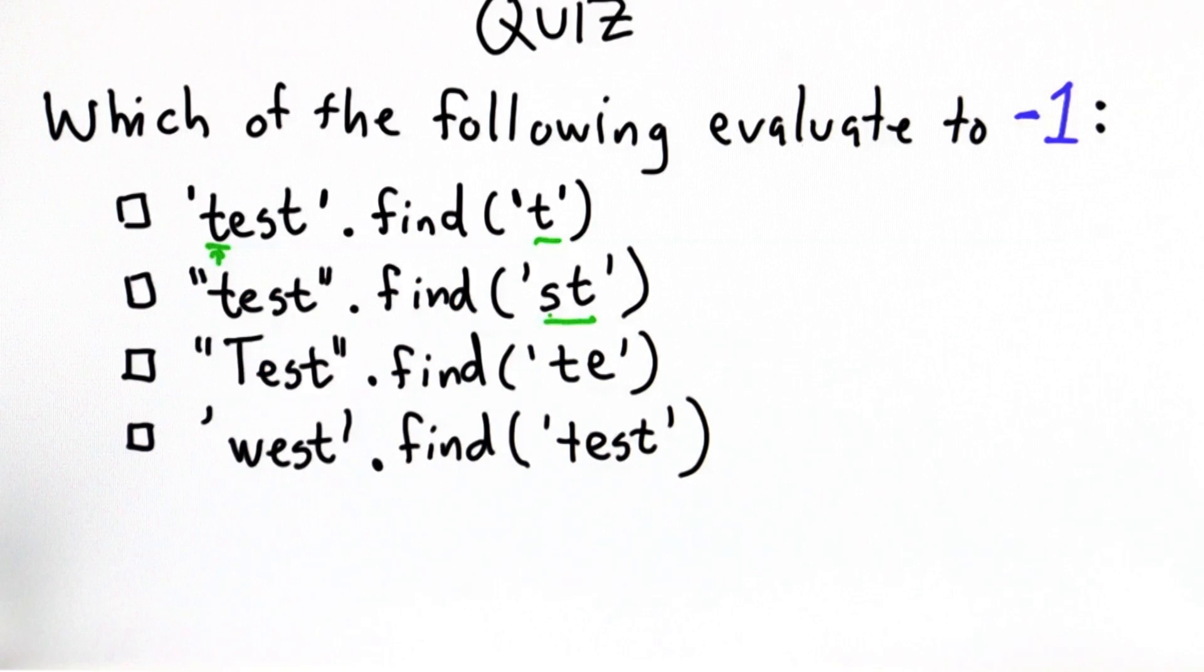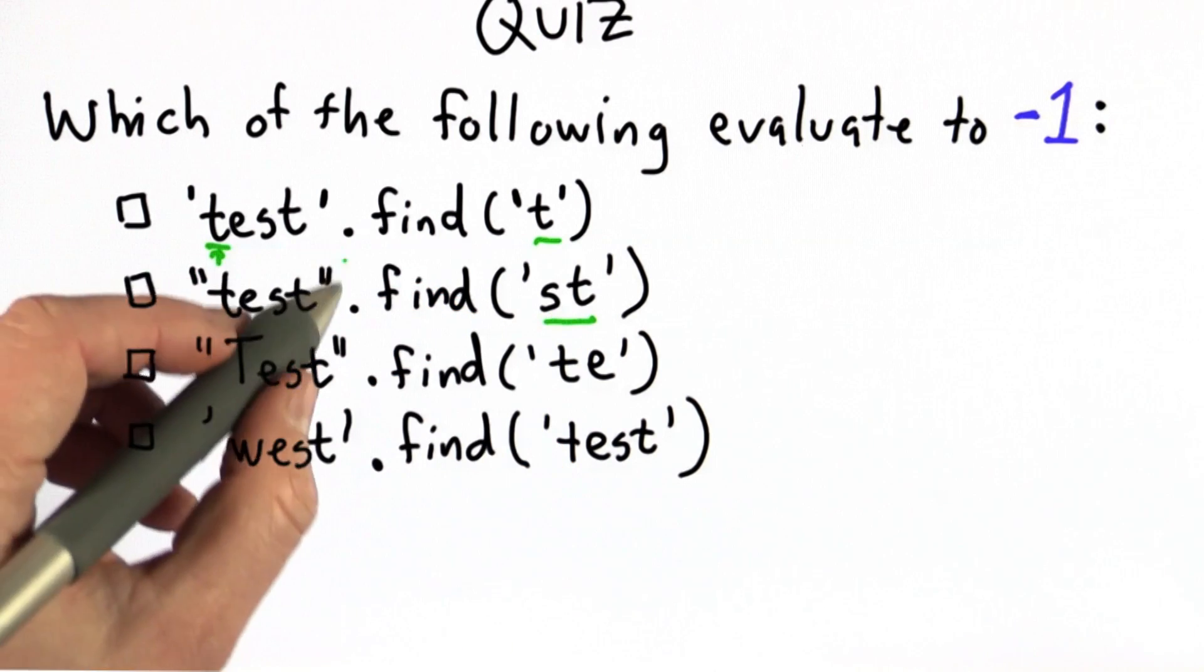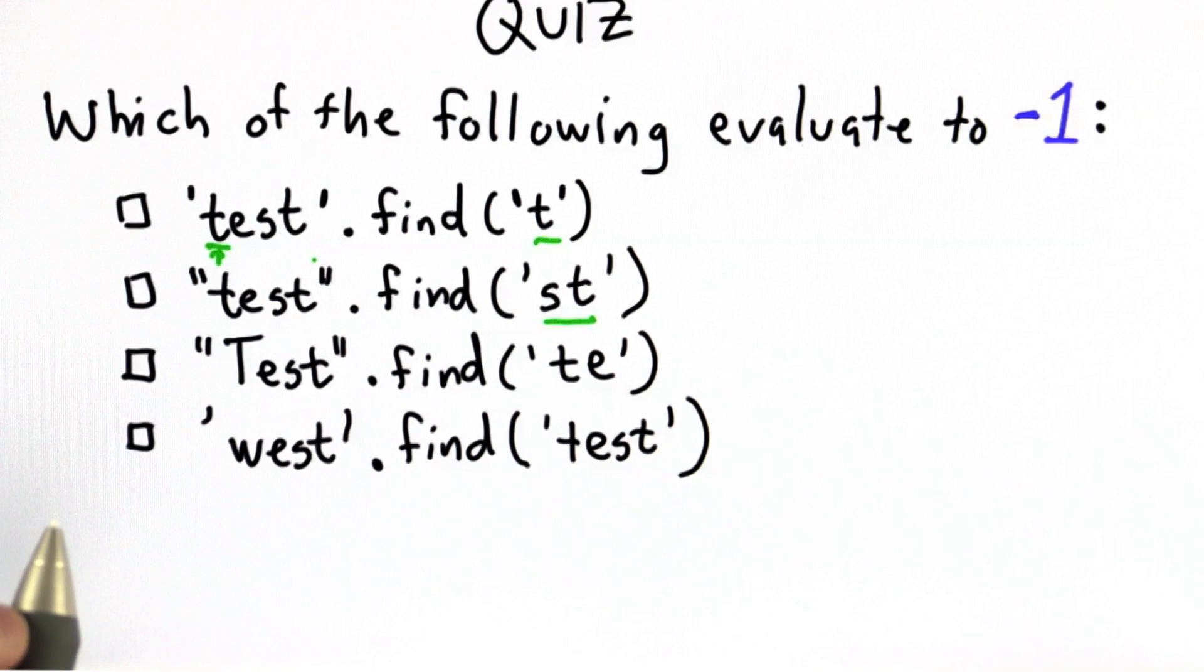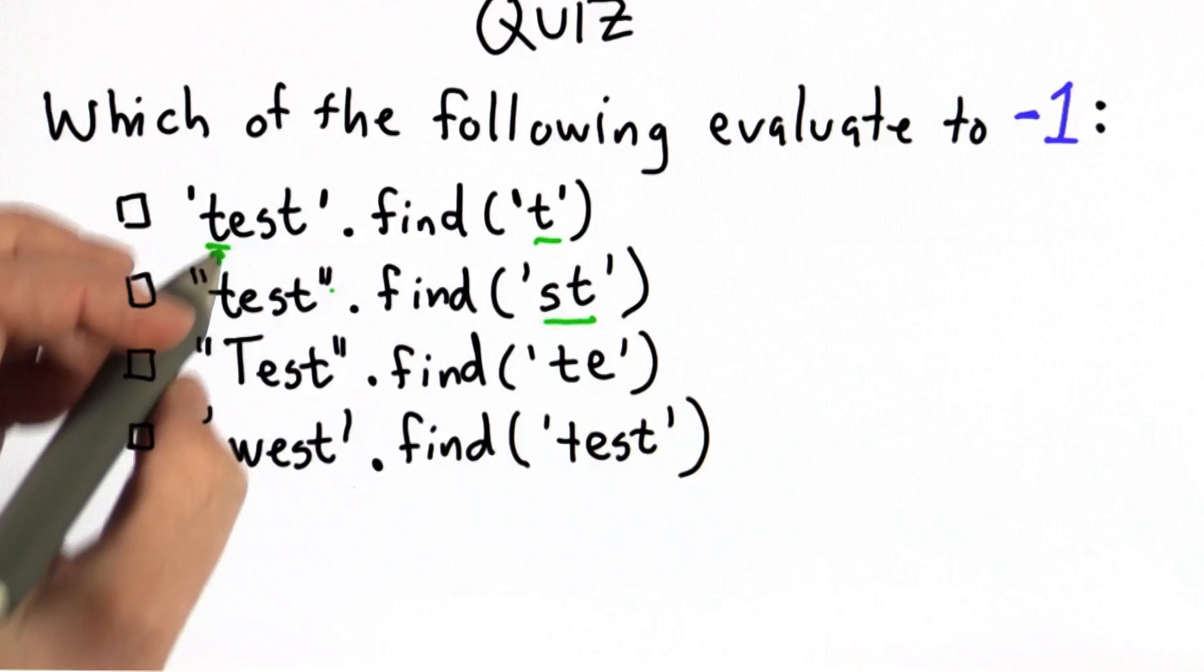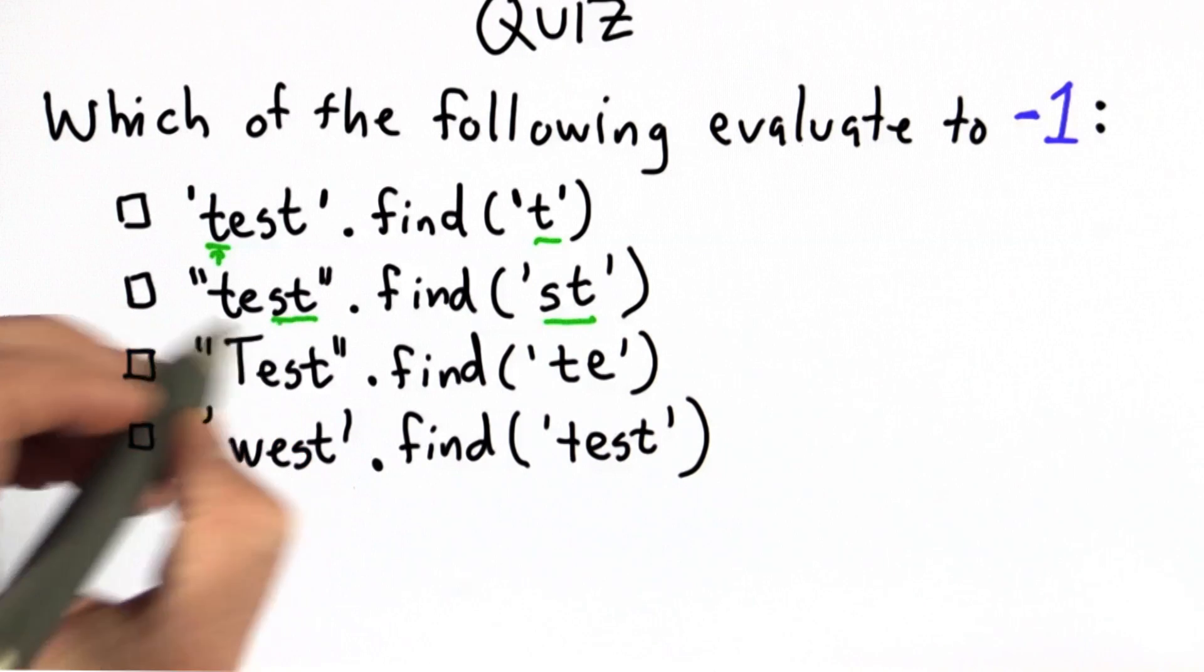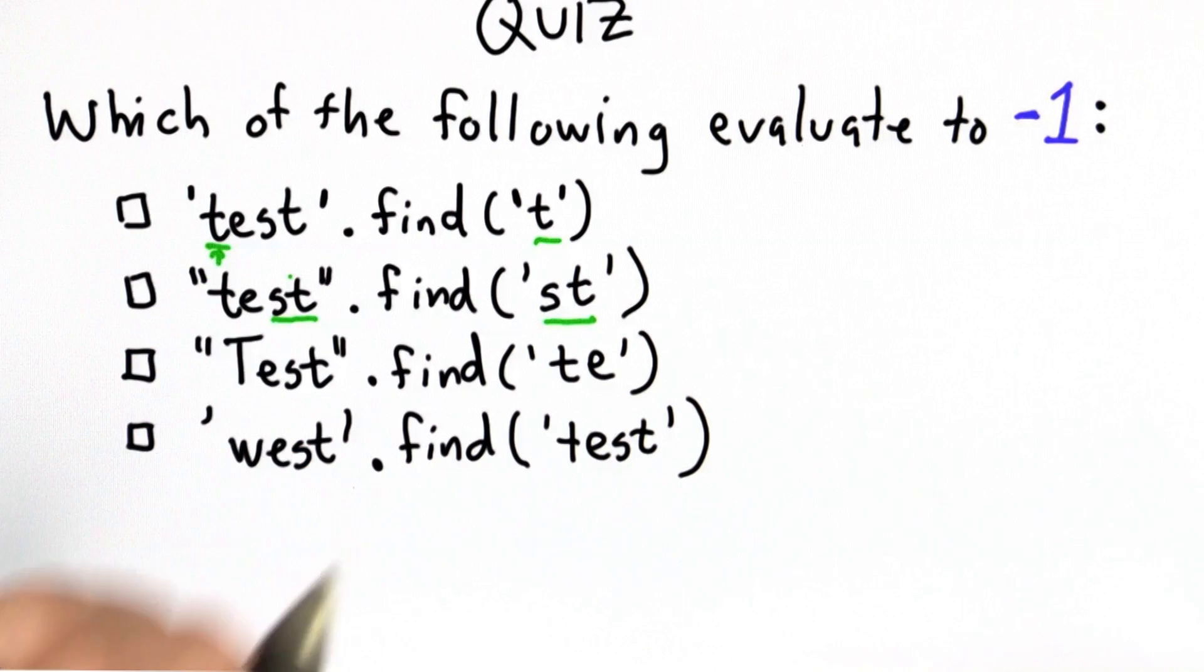For this one, we're looking for the string st. Strings are the same whether they have single or double quotes. It doesn't matter what we use as long as we're consistent with the first and the end quote. And in this case, we find the string st at position 2. So that would return 2.